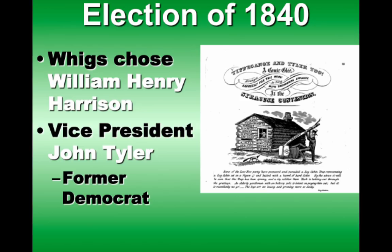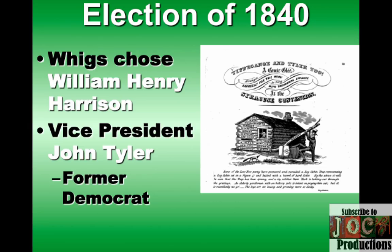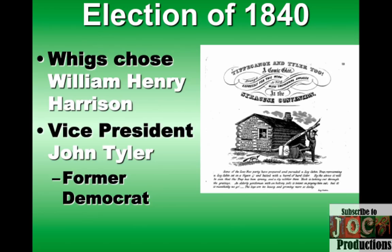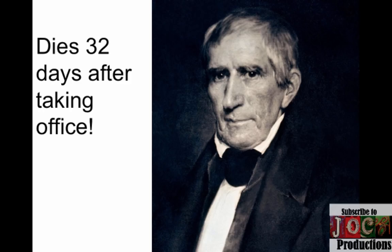We start with the election of 1840 — Tippecanoe and Tyler too. The Whigs pick William Henry Harrison as their candidate, the war hero from Tippecanoe, and his vice president is actually a former Democrat by the name of John Tyler. Because of some personal beef with Andrew Jackson, he leaves the Democrat party and joins the Whig ticket in 1840. They win with that cool slogan. Unfortunately, William Henry Harrison, after 32 days in office, dies — gives a super long inaugural address and just dies — the shortest-term president ever.